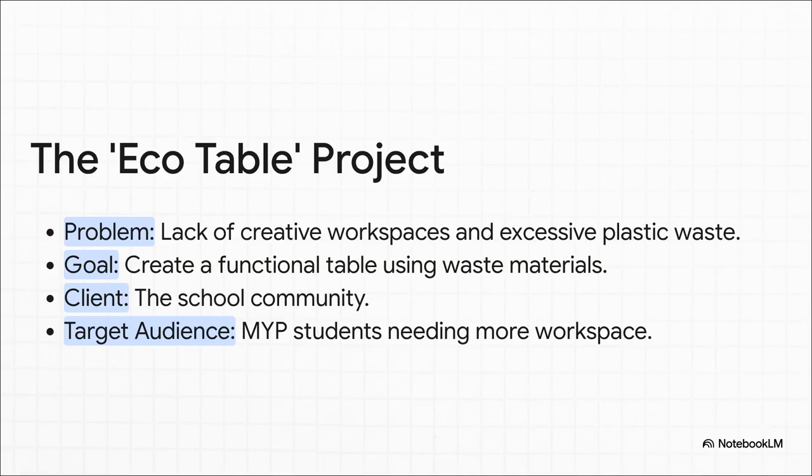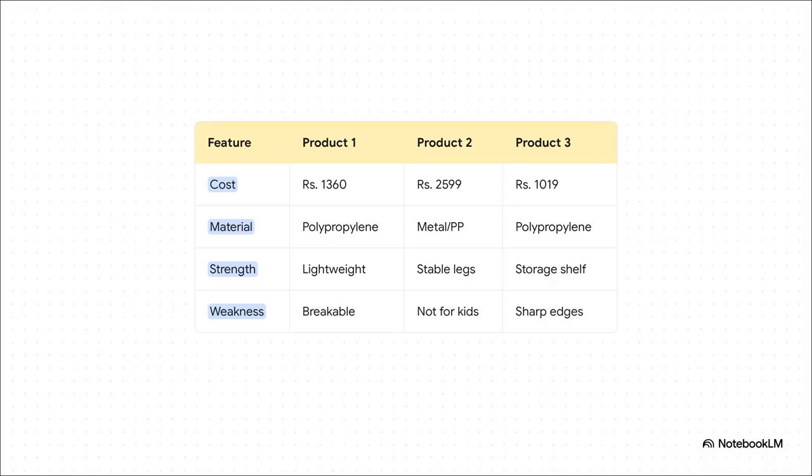The client is the whole school, sure, but the target audience is super specific: fellow students who really need more desk space. Now this is so important. The student didn't just invent something out of thin air. They did their homework. They actually analyzed existing plastic tables, looking at everything from cost and materials to their big weaknesses. This helped them find a real gap. They saw that other tables were too expensive, or flimsy, or had sharp edges. All of these were clear opportunities for their design to be better.